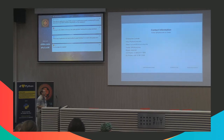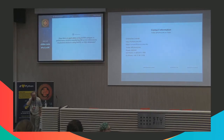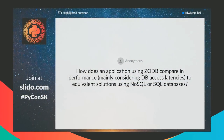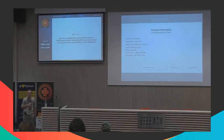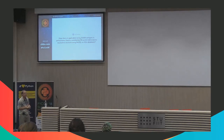How does an application using ZODB compare in performance, considering DB access latencies, to equivalent NoSQL or SQL solutions? Say you're doing sensor data collection — you're getting all this data and just want to save it to a database without transactions across multiple objects. Then you don't want to use this because transactions slow you down. If you're doing a relational database and just writing a single record, the relational database will be faster. On the other hand, if you're writing 10 different records across 10 different tables, ZODB writes all the objects to the end of a file — it'll be way faster.